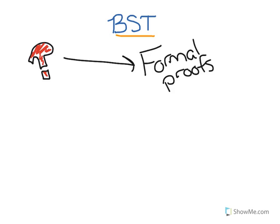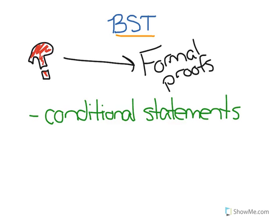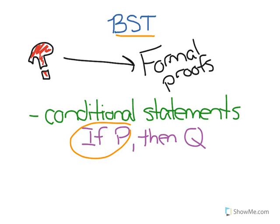Direct proofs are used when proving conditional statements, which are statements that are in the structure of if-then statements, or if P, then Q. In direct proofs, you assume that P is true, and then you prove that Q must also be true.